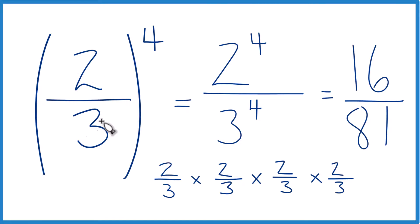So two-thirds to the fourth power, that equals the fraction sixteen eighty-first, or sixteen over 81. That's how you do it. This is Dr. B, and thanks for watching.